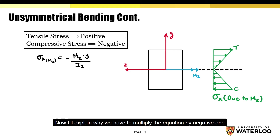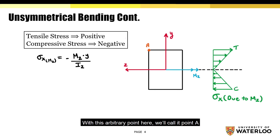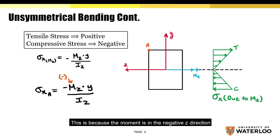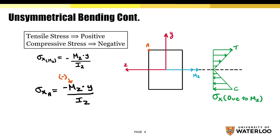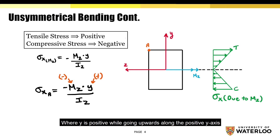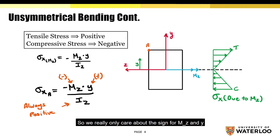Now I'll explain why we have to multiply the equation by negative 1, with this arbitrary point here — we'll call it point A. Based on the stress distribution and the coordinate system, the bending stress at A should be positive, but Mz is negative. This is because the moment is in the negative z direction. Meanwhile, y is considered positive based on the current coordinate system in place, where y is positive while going upwards along the positive y axis. Keep in mind, the I value is always positive, so it has no effect on the sign convention. So we really only care about the sign for Mz and y.